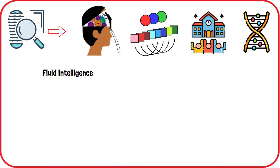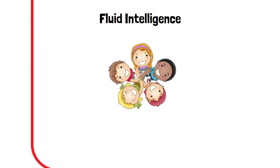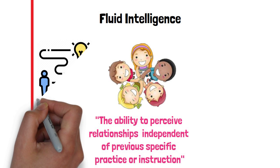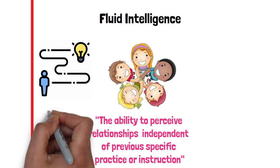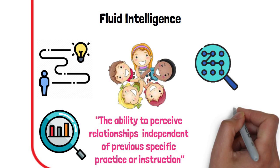Cattell believed that fluid intelligence is more important in childhood. He defined it as the ability to perceive relationships independent of previous specific practice or instruction — in layman's words, thinking on your feet. It is crucial when encountering new problems that cannot be solved with existing knowledge. Examples of fluid intelligence include developing problem-solving strategies, interpreting statistics, philosophical reasoning, and solving puzzles or abstract problems.